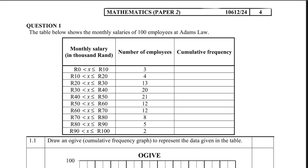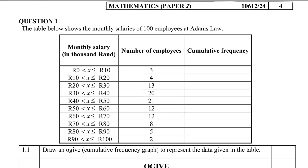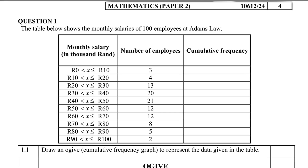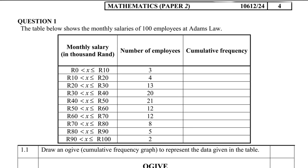Some people call it an ogive, some people call it an ogive — but does it matter? Let's take a look. The table below shows the monthly salaries of 100 employees at Adam's Law. Question 1.1: draw a cumulative frequency graph. I think let's use that term — cumulative frequency graph.